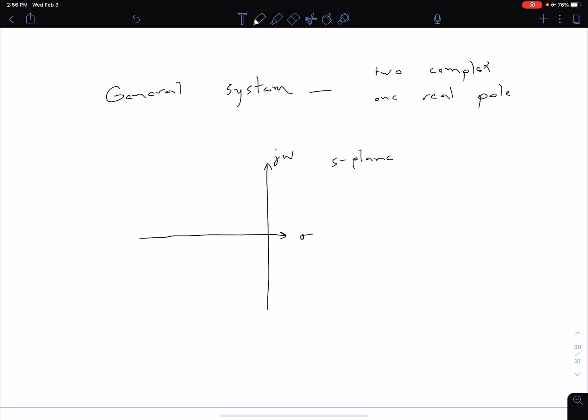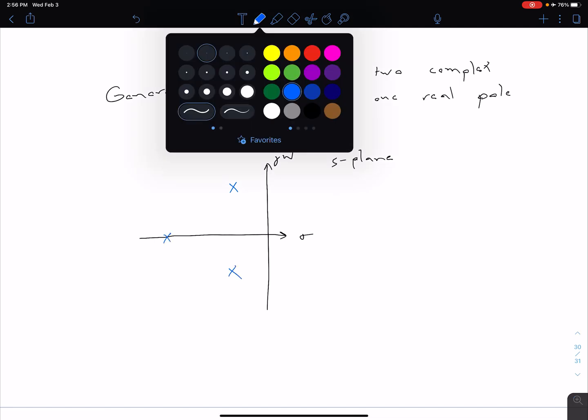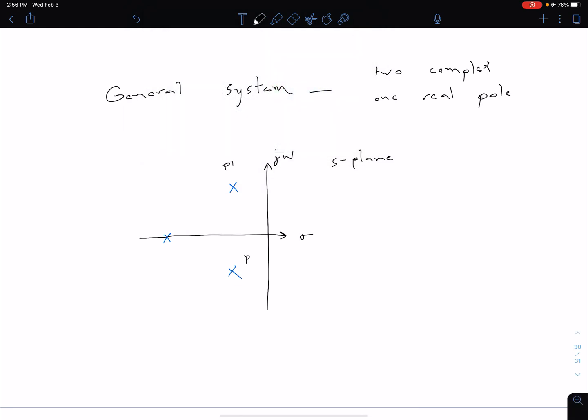This is our S-plane with our real and complex axes. Let's say we have our complex poles P1 and P2 here, and then we have some real pole P3 on the real axis. Based on our equations before, we know that pole 1 and 2 are going to be given by negative ζ·ωn plus or minus j·ωn·√(1 - ζ²). Our pole 3 is just going to be negative αr, where αr is going to be the distance from the origin on that real axis.